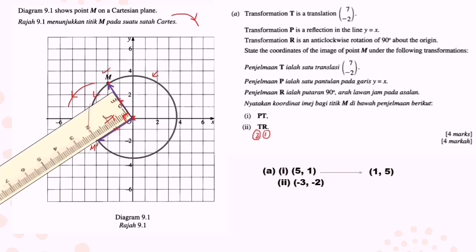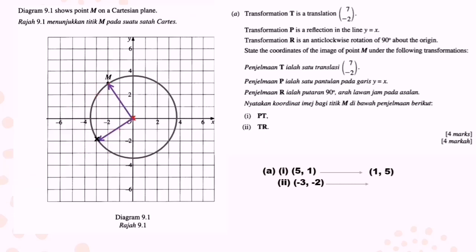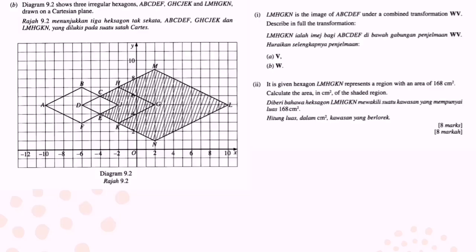After that we do the translation 7 negative 2. Still remember how to move: 7 steps go to right-hand side and negative 2 means go down 2 steps. So the coordinate is 4, negative 4.